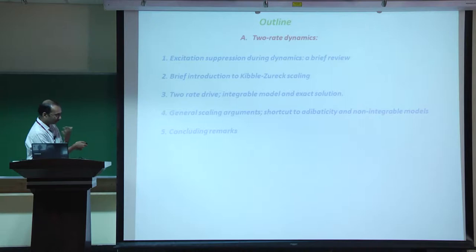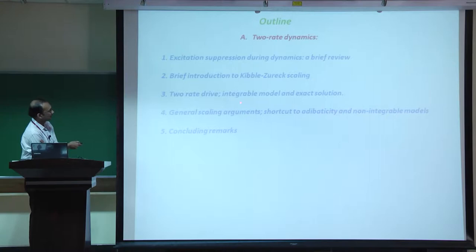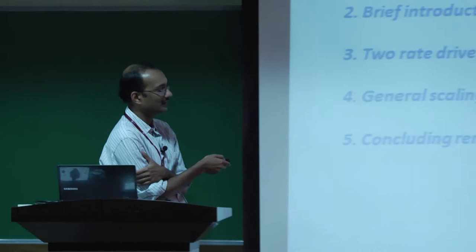I'll give a brief review of other methods of excitation suppression, then a brief introduction to Kibble-Zurek scaling, and then show that this two-rate drive - via an exact solution of an integrable class of models like the Ising and Kitaev - provides a generalization of Kibble-Zurek scaling and also gives suppression of defects when going through a quantum critical system.